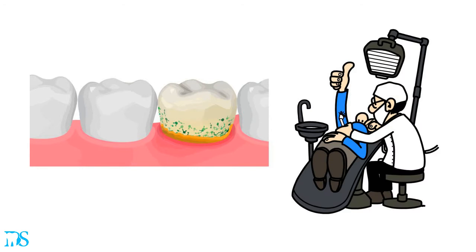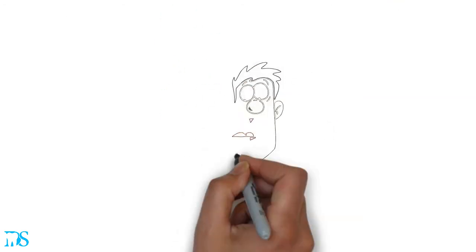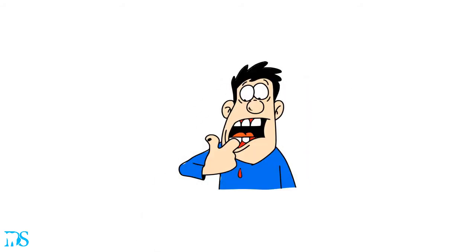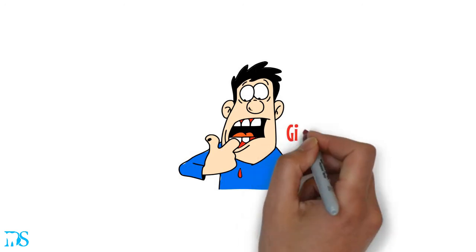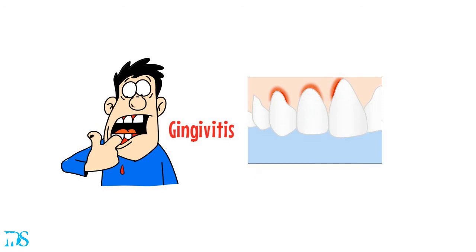Which brings us to our second risk of avoiding the dentist, gum disease. Letting plaque and calculus buildup in your mouth is an almost guaranteed way to get gum disease, otherwise known as gingivitis. Pretty much everyone has some form of gingivitis. They just don't realize it.